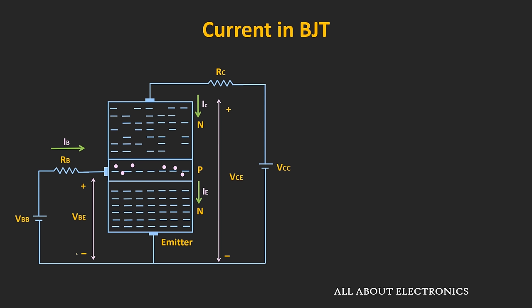During our discussion, we haven't considered the current due to minority charge carriers in the collector region. The base-collector junction is reverse biased, so if we remove the emitter connection, the current flowing through the collector is only due to minority charge carriers — let's call this ICO. This current is similar to the reverse saturation current seen in the PN junction diode. The total collector current ICT equals IC plus ICO. Typically, ICO is in the range of µA while IC is in the range of mA.